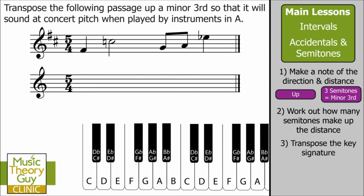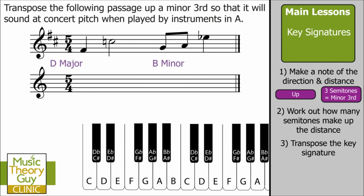Rule three: transpose the key signature. We can see there are two sharps in our question, highlighted in red. This is where you need to know about key signatures — have a look at my other video on key signatures if you need help. With two sharps in the key signature, it could be either D major or B minor. For transposition purposes, it really does not matter which one you choose, and I'll prove why in a moment.